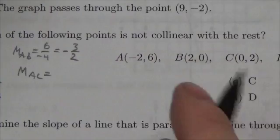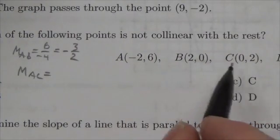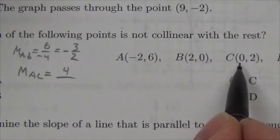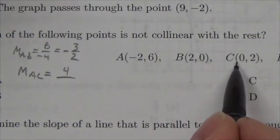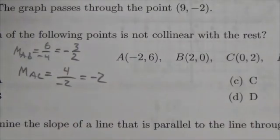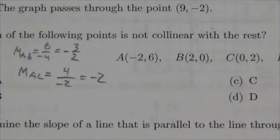Now let's check the slope of AC. So AC, this is gonna be six minus two, so four, over negative two minus zero. Negative two minus zero is negative two, and so this is going to be negative two.